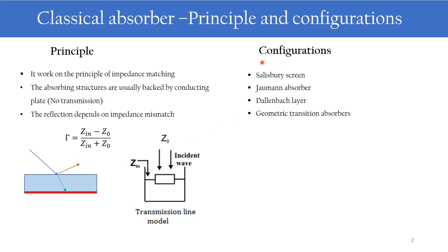Some of the main configurations that are available are the Salisbury screen, Jaumann absorber, Dallenbach layer, and geometric transition layer absorbers. I will be explaining the details of these configurations in the next slide.